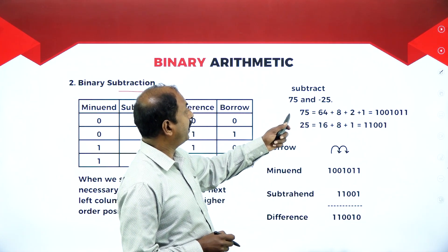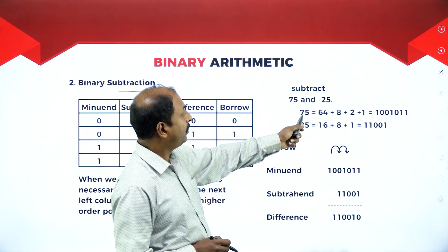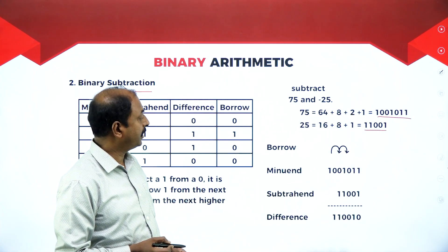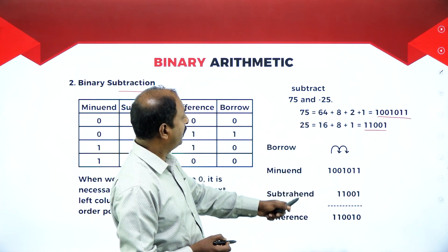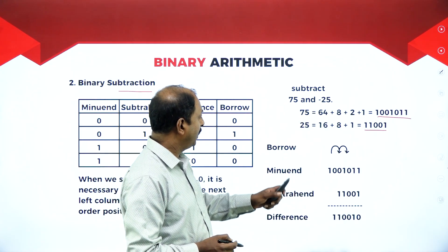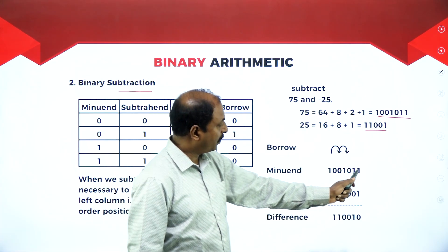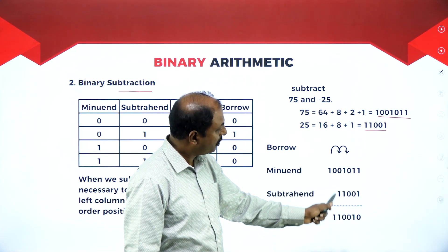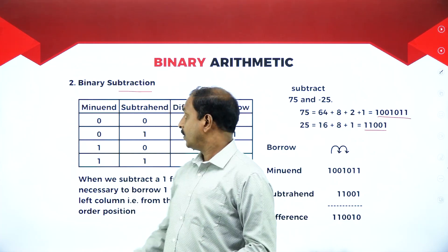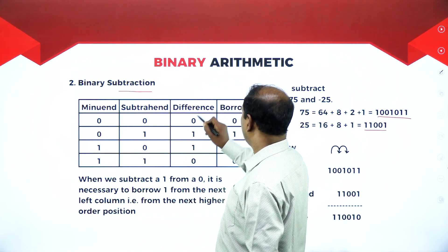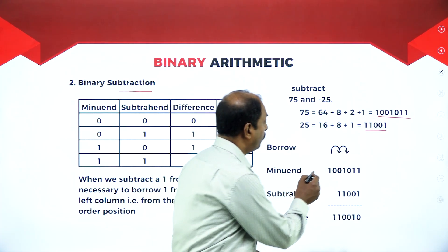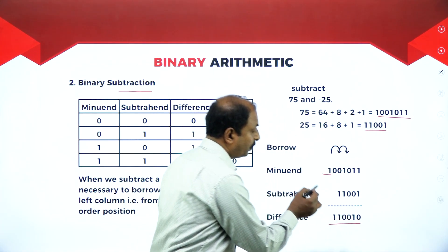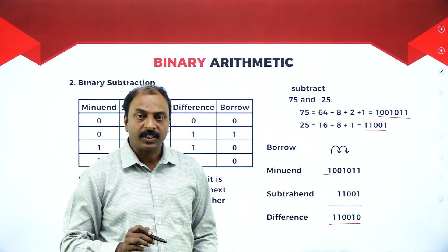Now the example: subtract 25 from 75. The binary equivalent of 75 is given, and the binary equivalent of 25 is given. Here 75 is the minuend and 25 is the subtrahend. Subtracting: 1 minus 1 is 0, 1 minus 0 is 1, 0 minus 0 is 0, 1 minus 1 is 0. Where 0 minus 1 occurs, difference is 1 and borrow is 1 — we borrow from the next position. This is the final result — binary subtraction.